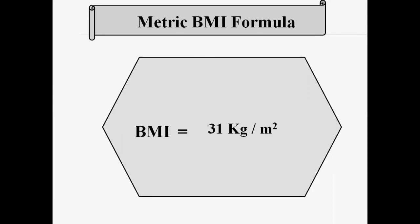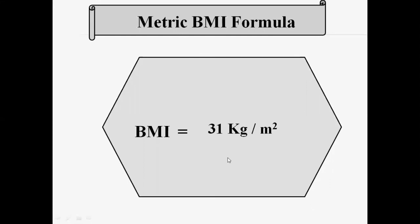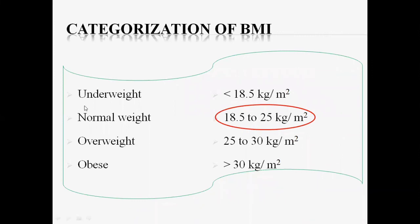Using this formula, you can calculate your own BMI. If your height is in feet and inches, adopt the same method to convert to meters, then apply the formula: weight in kg divided by height in meters squared. BMI values are divided into different categories: underweight, normal weight, overweight, and obese.